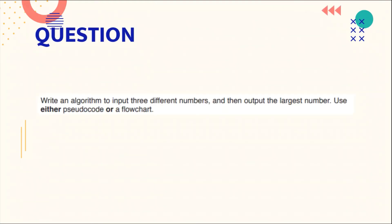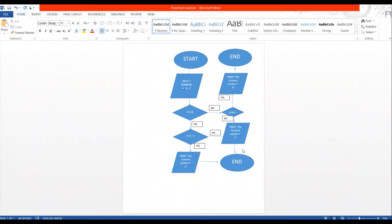Now let us look at a past paper question: 'Write an algorithm to input three different numbers and then output the largest number. Use either pseudocode or a flowchart.' We will discuss the answer for both. First, let's see how to draw the flowchart. Start with an oval labeled 'Start', then connect an arrow to a parallelogram for input.